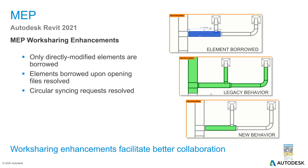MEP work sharing enhancements have been updated. When you select a duct section to request borrowing rights, the new behavior only borrows what you specifically select — you no longer have to grab the entire series. Previously, requesting to borrow a section would borrow the whole section; now it borrows just what you need and updates only that portion on save.